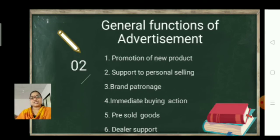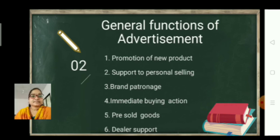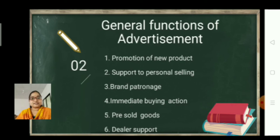Next we will see the general functions. The general functions are: promoting a new product; support to personal selling; brand patronage — for a particular brand we can develop advertisements; immediate buying action — showing discounts immediately on an advertisement makes more customers rush to your company or outlets; pre-sold goods — second-hand homes, second-hand bikes, tractors, engines and other products can also be sold again through advertisements; and dealer support — for dealer support also we can develop advertisements.